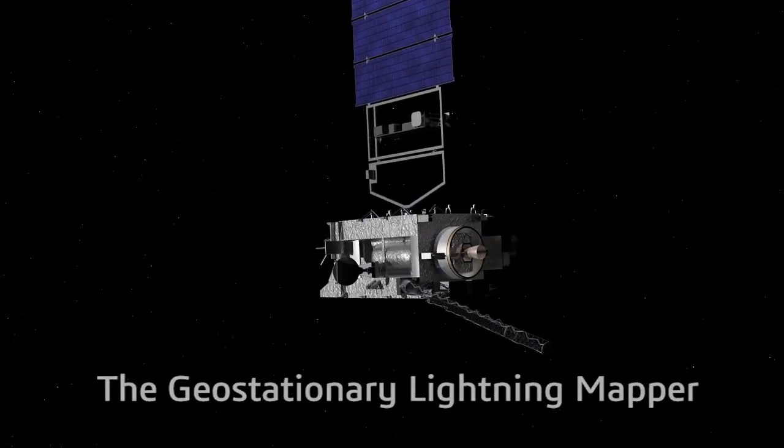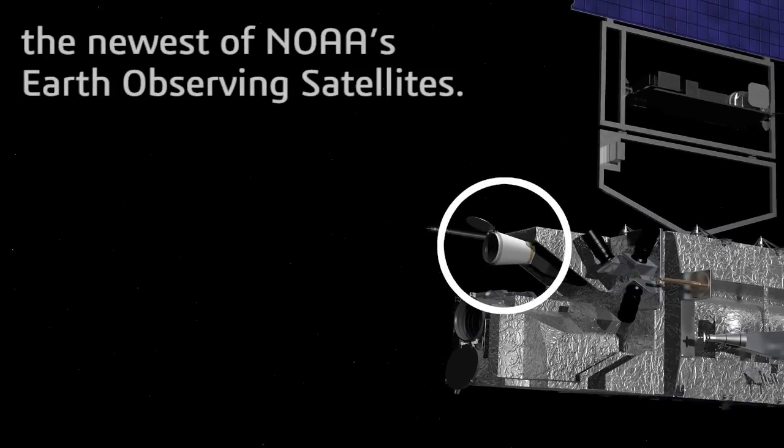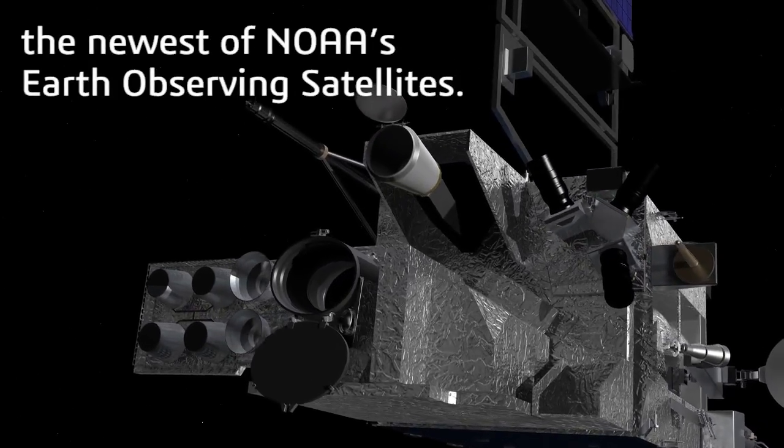The Geostationary Lightning Mapper, or GLM, is an instrument onboard GOES-16, the newest of NOAA's Earth-observing satellites.